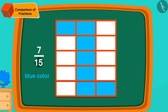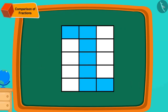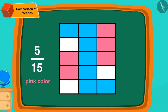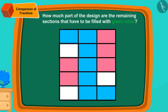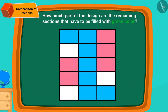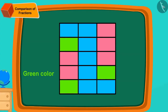Can you fill color in this cloth according to Chanda's design? Chanda needs blue color in seven fifteenth sections — seven out of fifteen sections have blue color. We can fill it in this way. Now, can you fill five fifteenth sections with pink color? Well done, children. You have filled the color perfectly. Green color is in the three fifteenth part of Chanda's design.